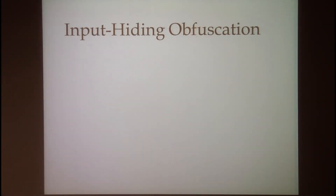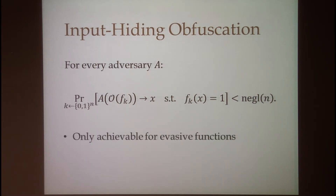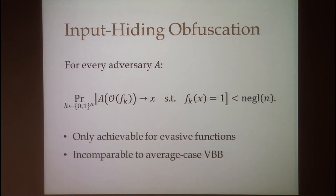We also introduce a new notion called input hiding obfuscation. An obfuscation is input hiding if for every adversary given an obfuscation of a random function in the family, the adversary cannot use the obfuscation to find a preimage of 1. Unlike VBB, input hiding only really makes sense for evasive functions, since if the function is not evasive it's always easy to find a preimage of 1. Interestingly, we show this is not implied by average case VBB — even if an adversary can find a preimage of 1, it still doesn't mean it can learn a predicate of the key, especially when the preimage set of 1 is of super-polynomial size.